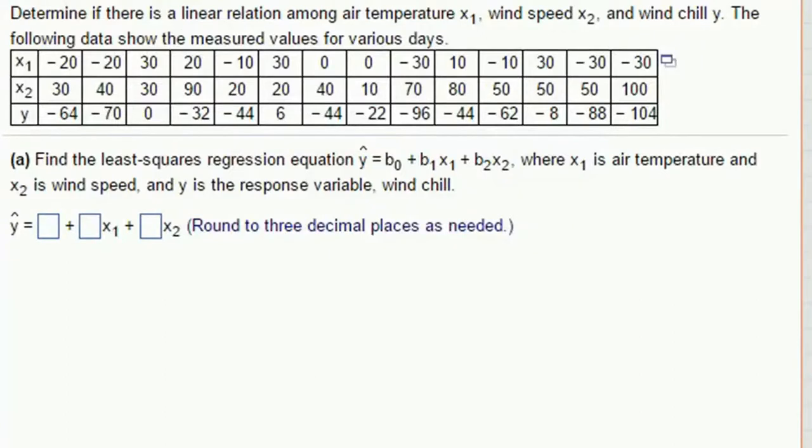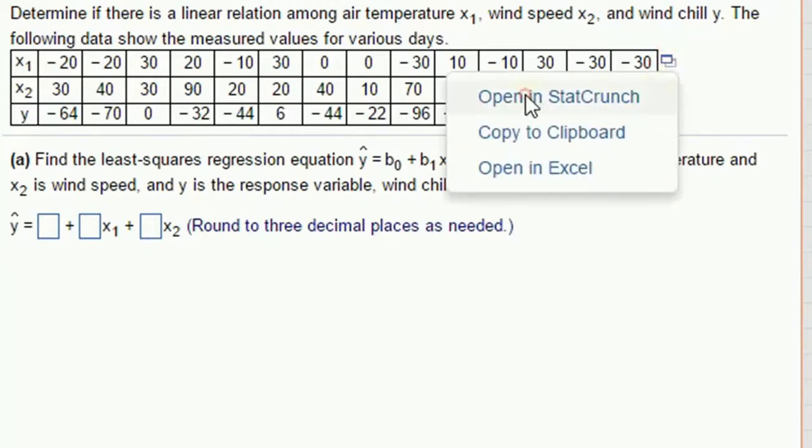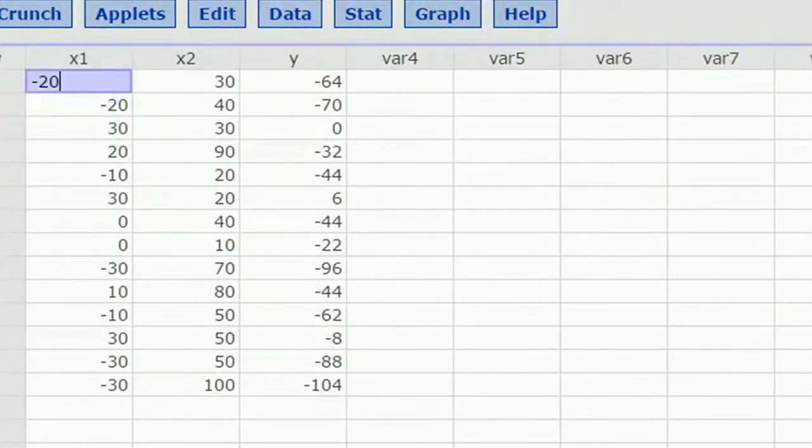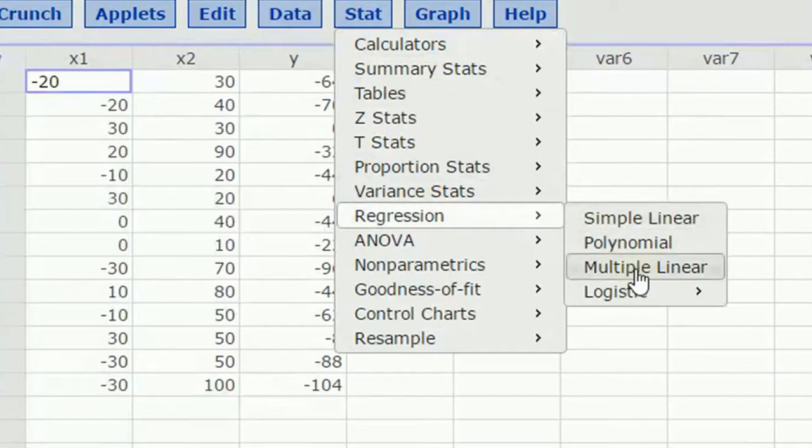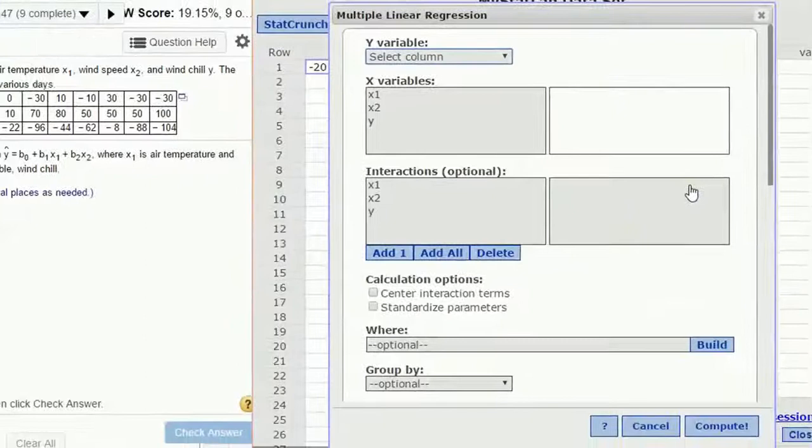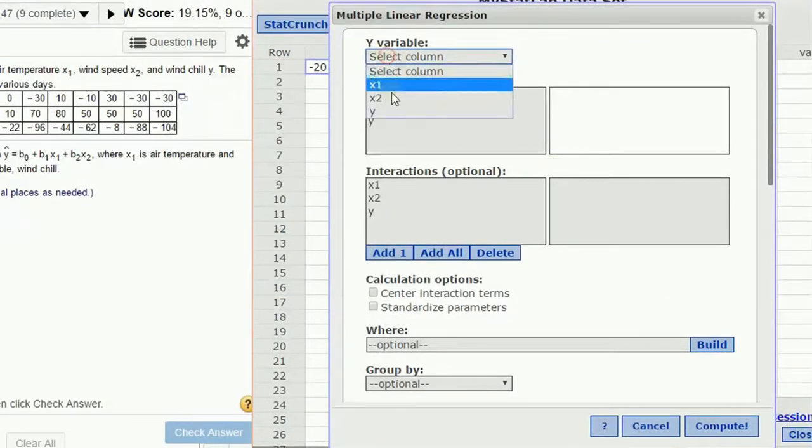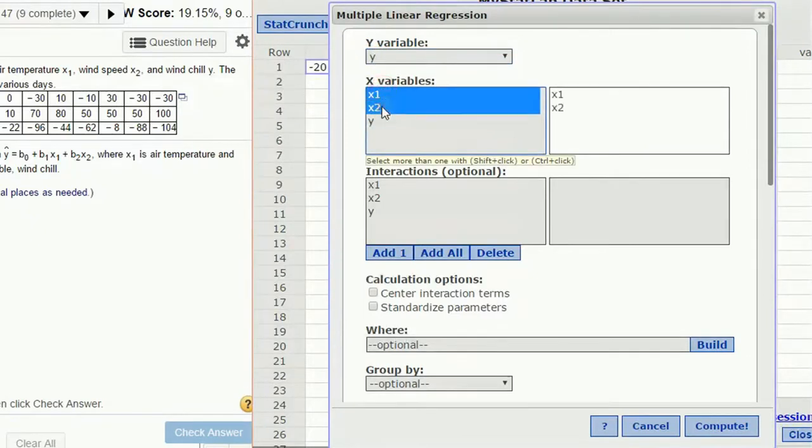All right, fun. So now we're going to see what it means to do multiple linear regression. Multiple linear regression refers to having multiple X values. We've got X1 and X2. So we can do it just as we were doing before, pretty much, except we're going to not use simple linear regression in StatCrunch, but we're going to use multiple linear regression. So what we have, we have Y is the wind chill, X1 is the temperature, and X2 is the wind speed. So under the Stat menu, under regression, I'm going to go down to multiple linear regression. This is just going to allow me to select multiple X values. Y is my Y variable, and I have to hold down Shift to select both X variables. Interactions are optional. We're not covering interactions in this course, so just ignore that for now. I'm just going to click Compute, and I will get my model.